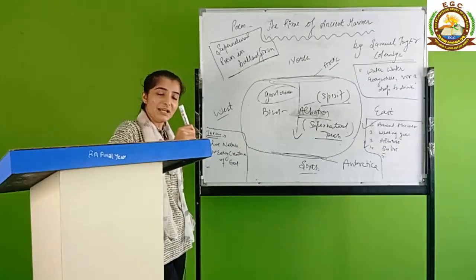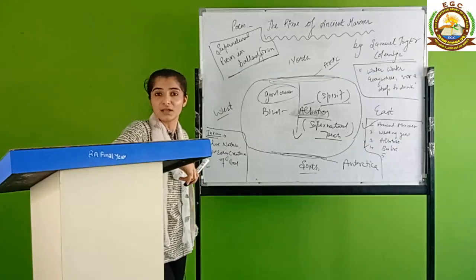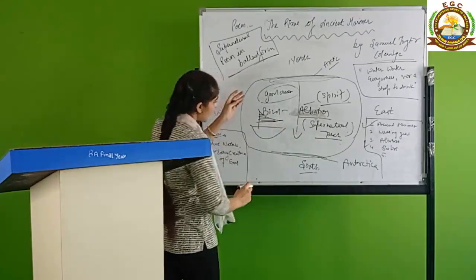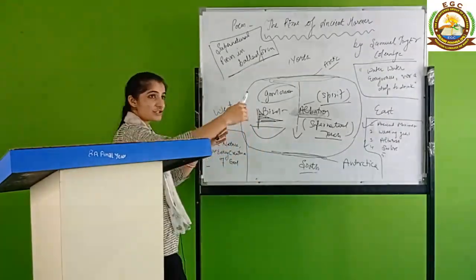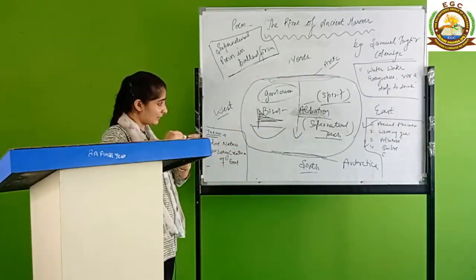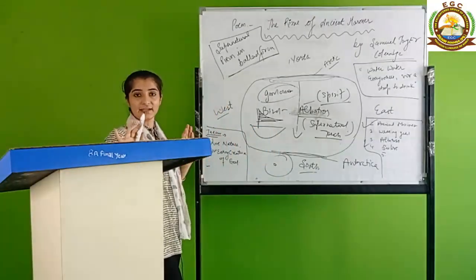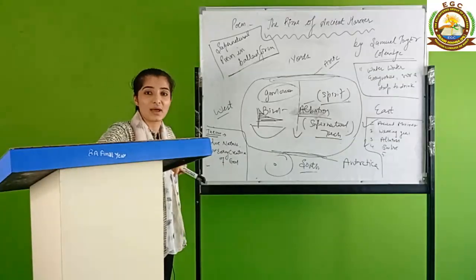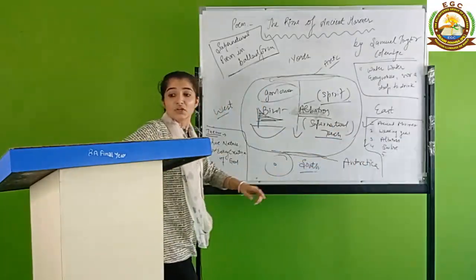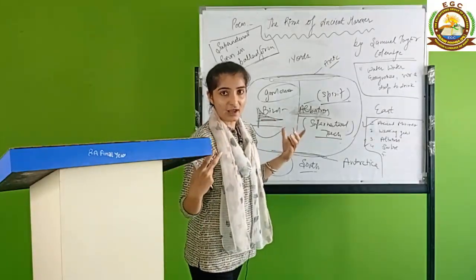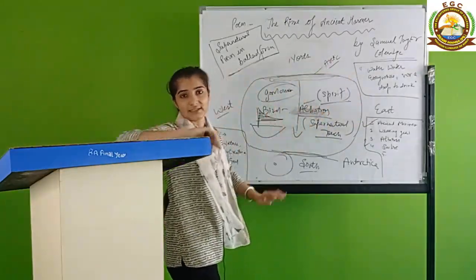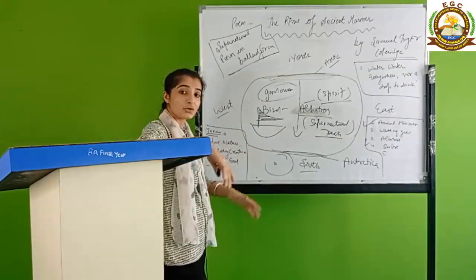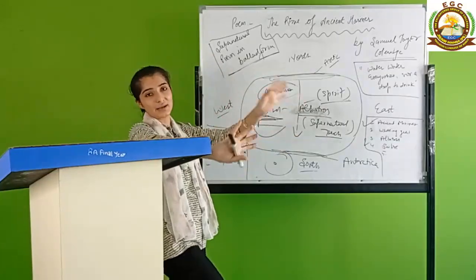When the mariner killed the albatross, what happened? The wind stopped. In the old times, boats and ships didn't run on electricity, they ran on wind. A flag was attached, whichever direction it went, the wind would flow and move the ship. The wind stopped. Their ship got stuck in the middle of the ocean. The sailors said to the mariner, what have you done? Why did you kill the albatross? The sailors made a garland from the albatross's wings and body and hung it around the mariner's neck, saying you deserve this. You have done a wrong deed, wear this garland as punishment.